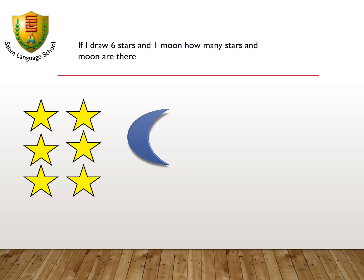If I draw 6 stars and 1 moon, how many moons and stars are there together? If we count them together, they are 7.